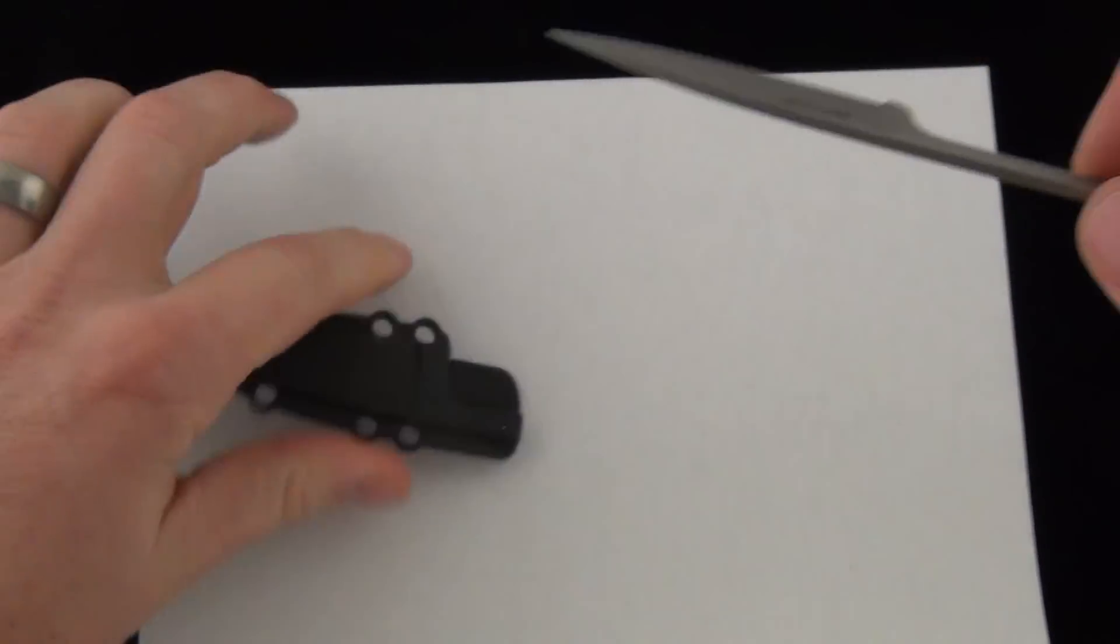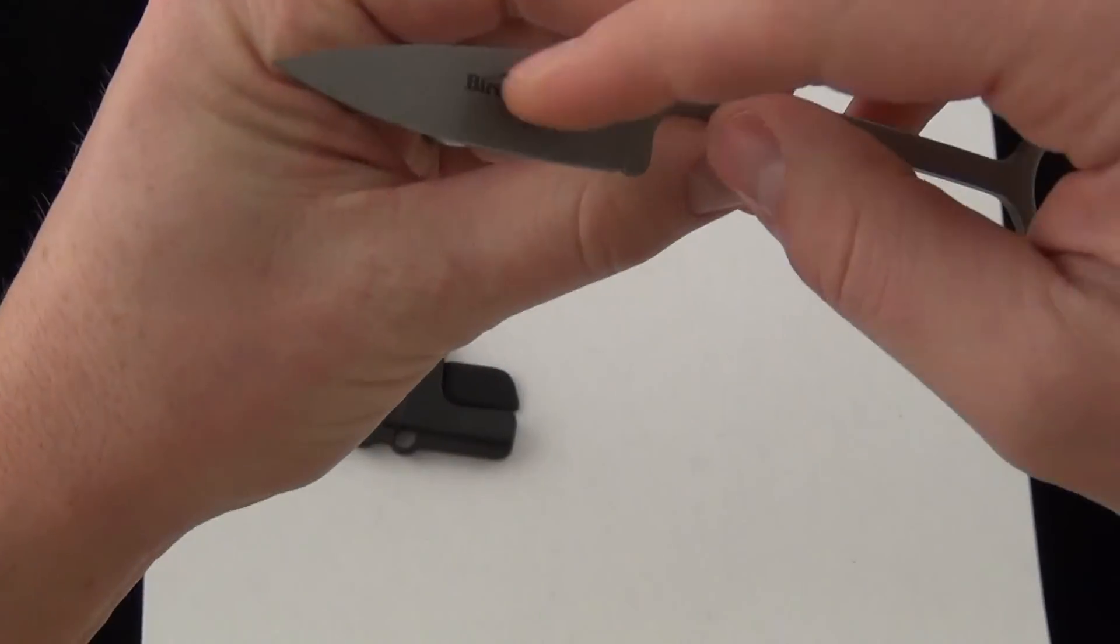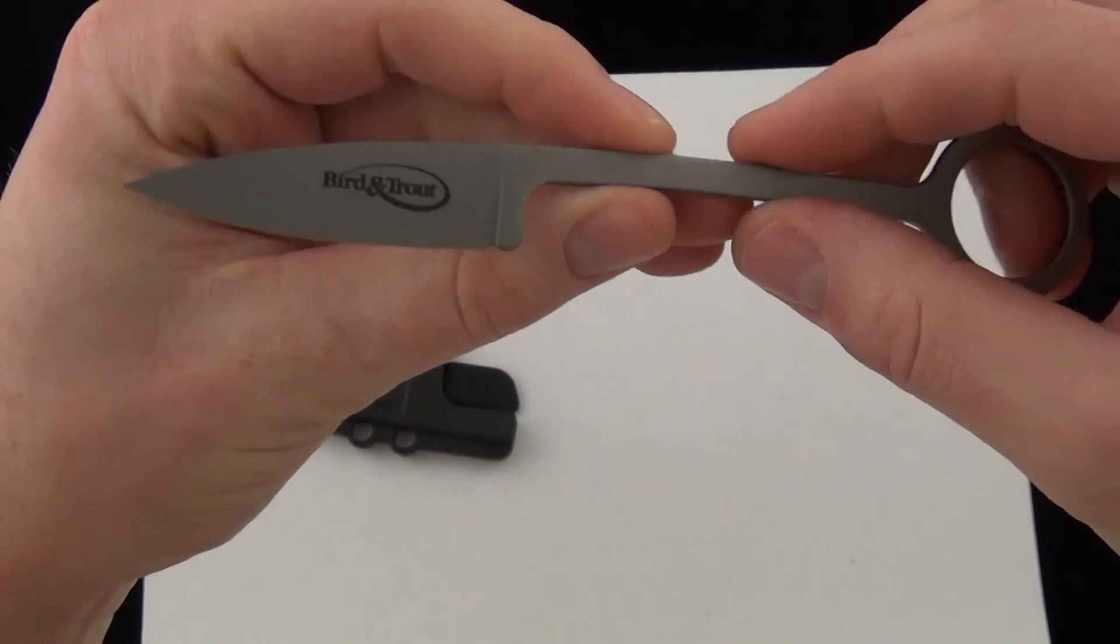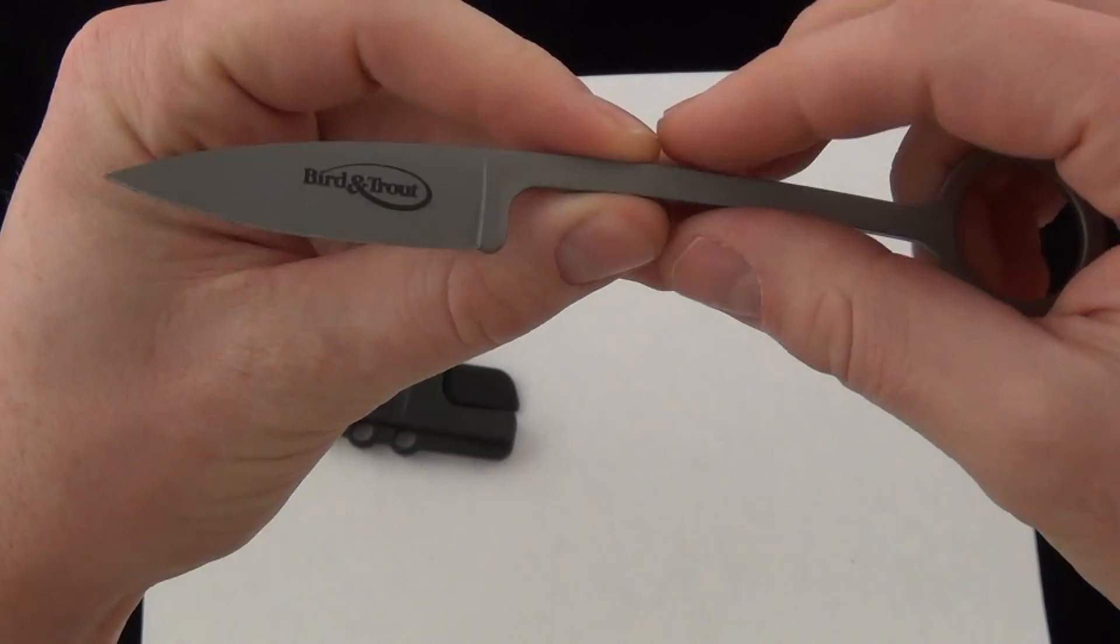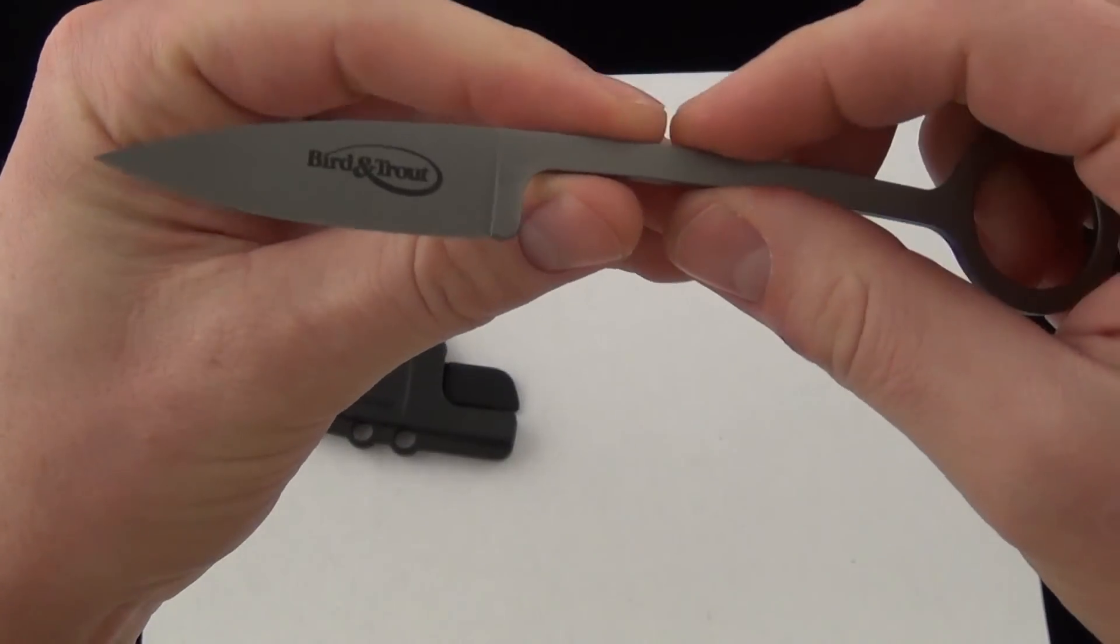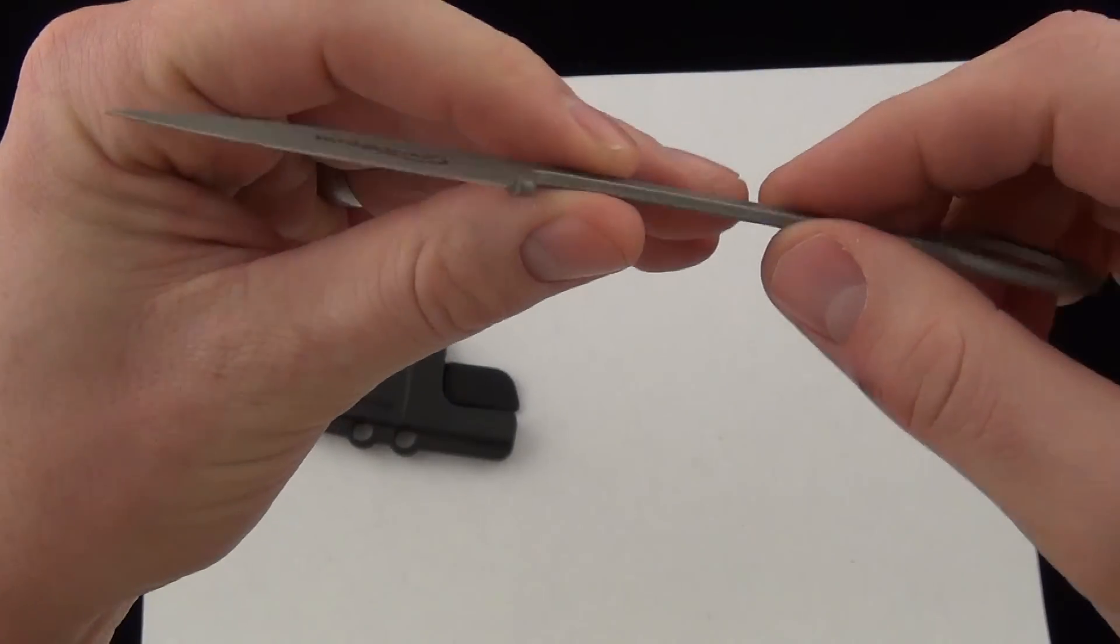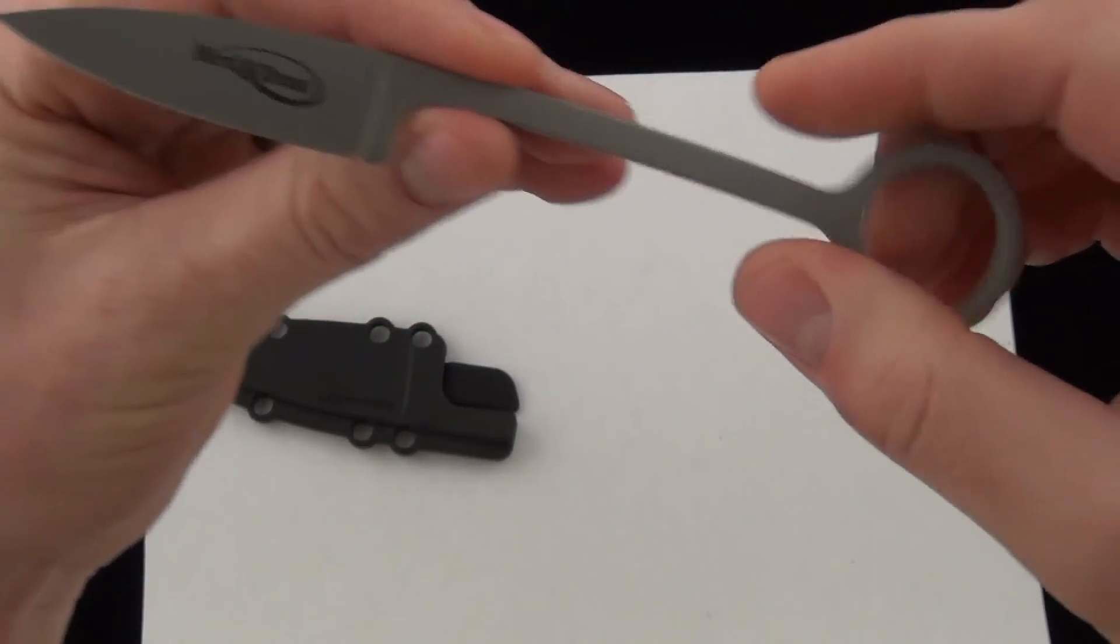It's a long, kind of slender handled, smaller blade. It's made for bird and trout. It's made for skinning birds or dressing out birds if you're hunting and also fishing for trout or other fish.